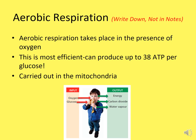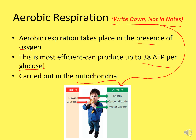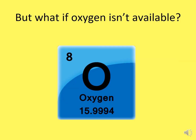Write this down — aerobic respiration takes place in the presence of oxygen and we can make up to 38 ATP per glucose, carried out in the mitochondria. The inputs are oxygen and glucose; the outputs are energy, carbon dioxide, and water vapor. But what if oxygen isn't available? Ponder that — what happens when oxygen isn't available?